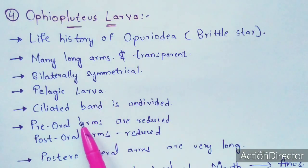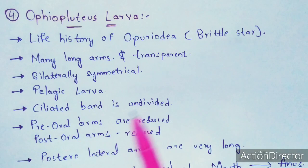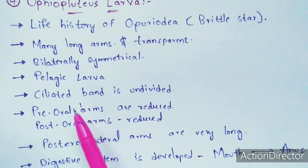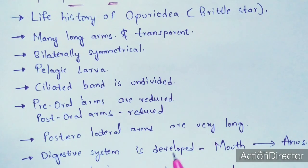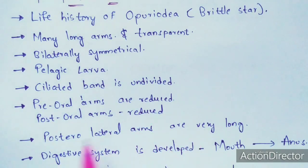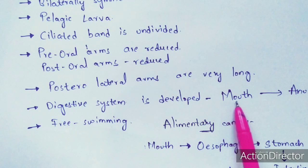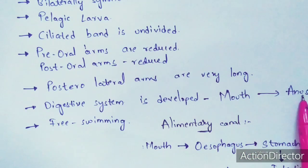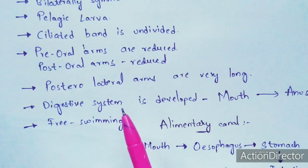The ciliated band is undivided. The pre-oral arms are reduced and the post-oral arms are also reduced. As the pre-oral and post-oral arms are reduced — meaning very short — the posterior lateral arms become very long. The digestive system is also well developed, starting from the mouth and going towards the anus. It exhibits the characteristic of free swimming.